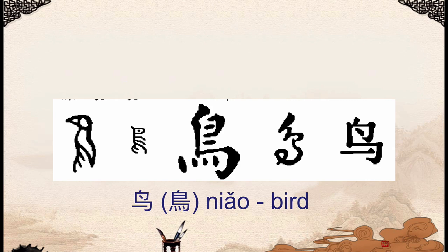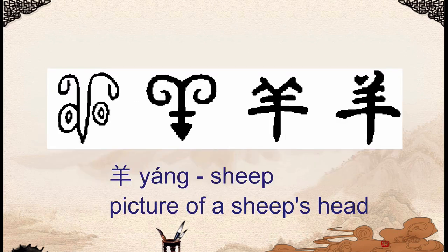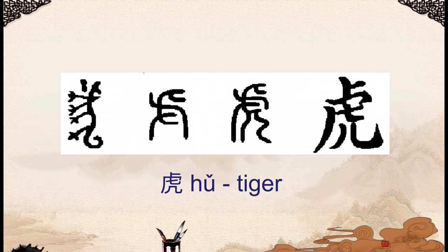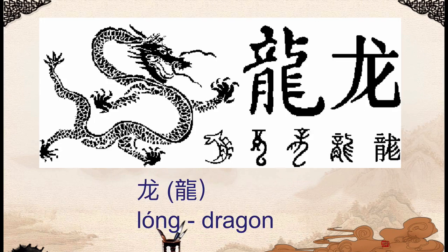鸟 means bird, and originally this came from a picture of a bird. 羊 is sheep, and originally this came from a picture of a sheep's head. 鼠 means mouse or rat, and originally this came from a picture of a mouse with the tail at the bottom. 虎 for tiger also originally came from a picture of a tiger. 龙 is the word for dragon in Chinese — it originally came from a picture of a dragon, with the traditional version of the character in brackets and the simplified version at the bottom.